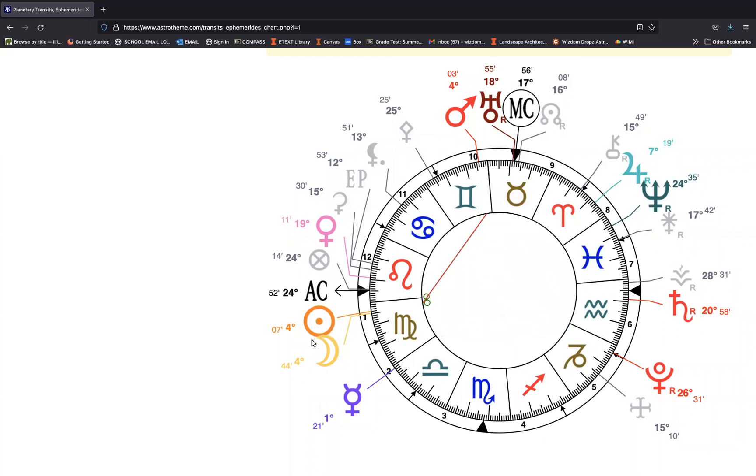That is going to be all of the Virgo business right here, where you see the Sun and Moon conjuncting. Mercury is the ruling planet of Virgo, and you see Mercury at one degree of Libra at this point in time.